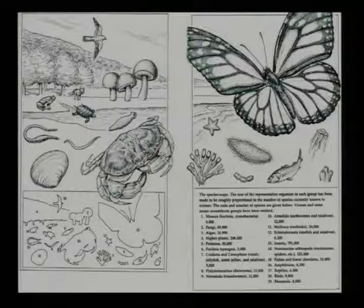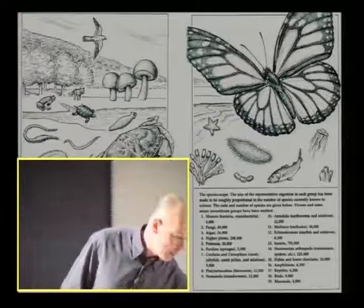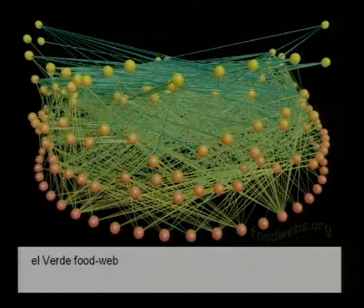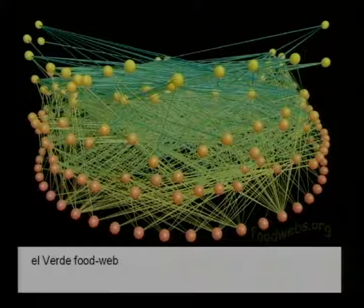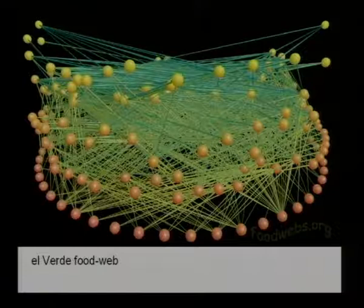One of the ways biologists describe biodiversity is through food webs, which might look like this. Each ball represents a species. Around the bottom are green plants using sunlight as their energy source, making food available to species higher up in the food web that eat them, and those go on to predators, and so on.